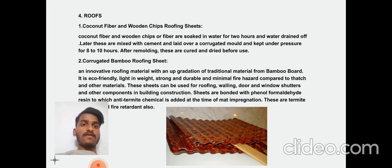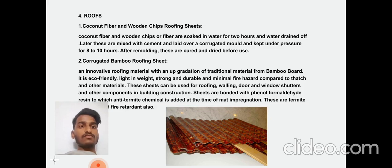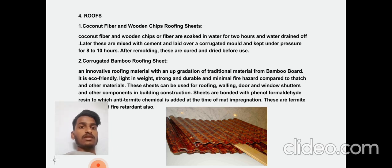Roofing: Coconut fiber and wooden chips roofing sheet — the fibers are soaked in water for 2 hours to gain strength, then mixed with cement, laid over a corrugated mold, and kept under pressure for 8 to 10 hours. After removing, they are cured and dried before use.